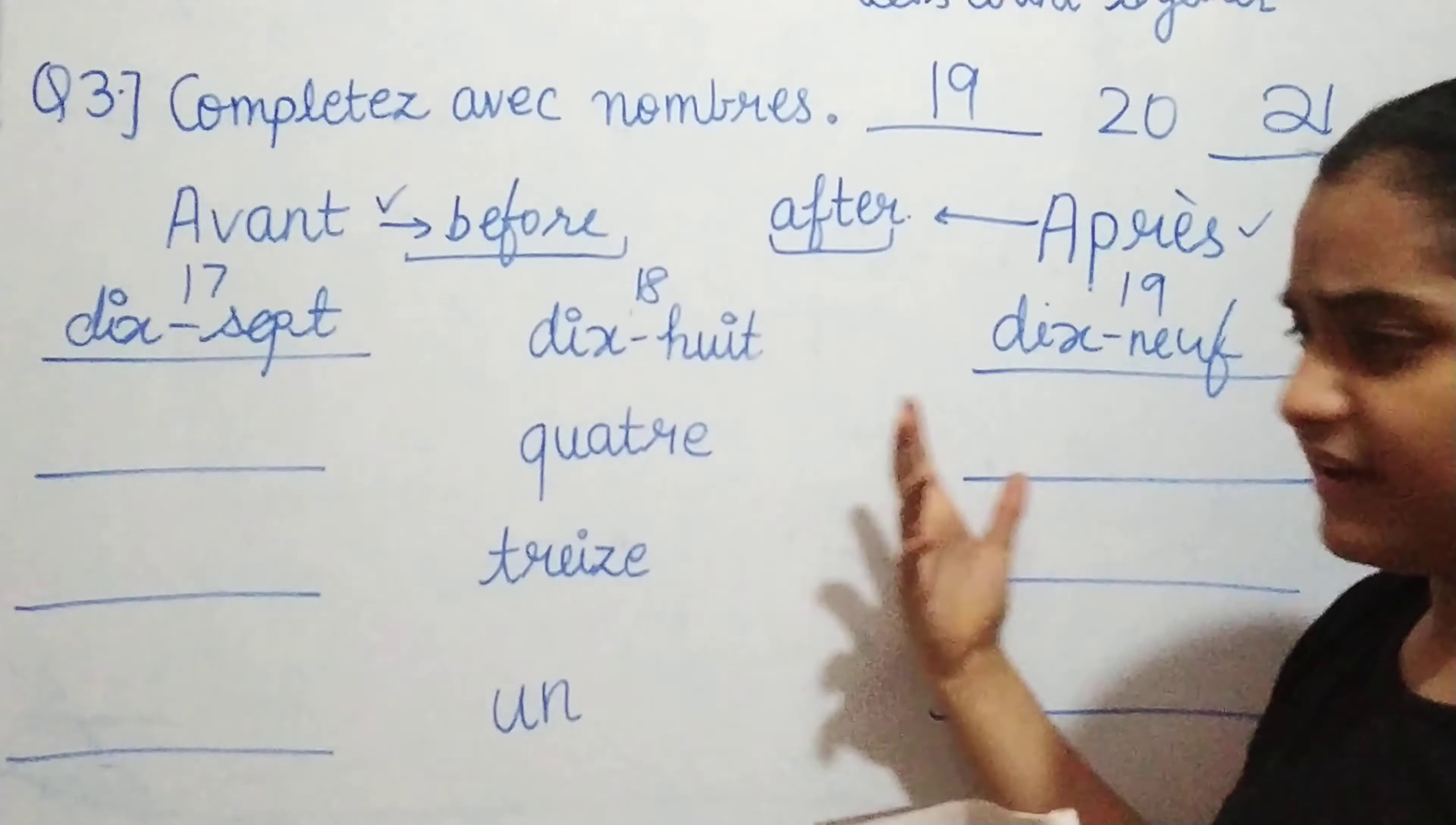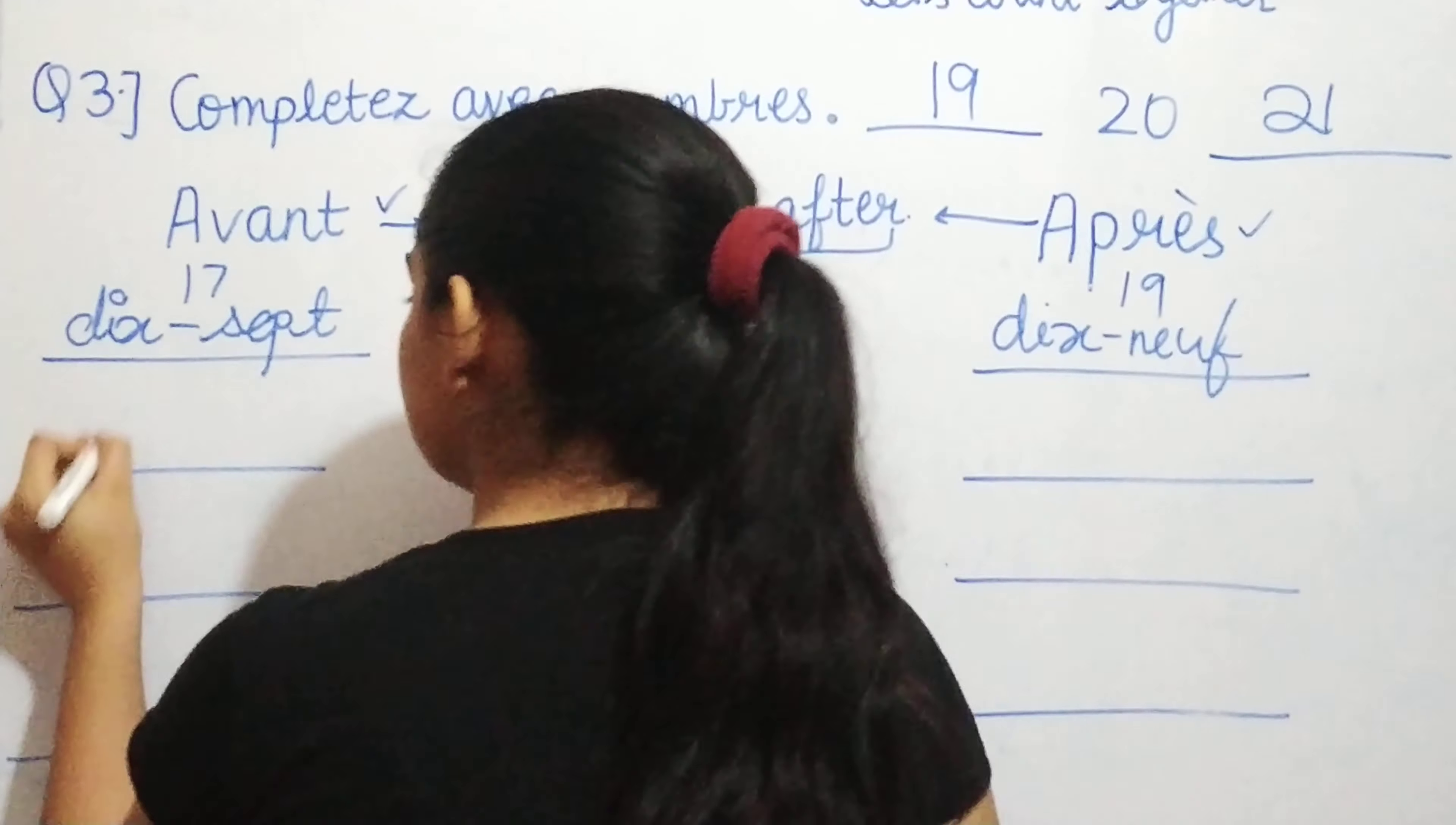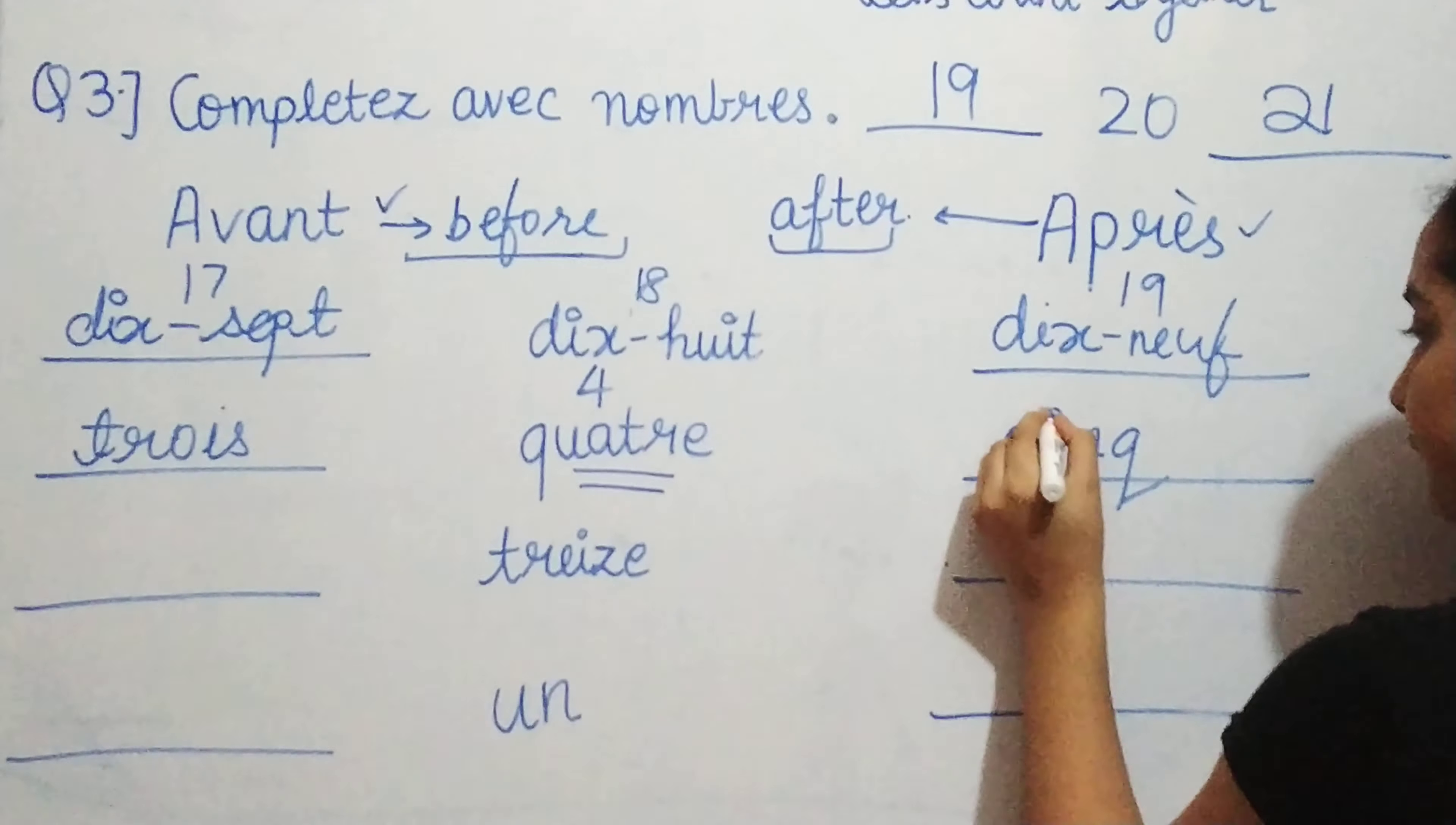Similarly, all will be like this. So now this is quatre. Quatre is what? Four. Once you know the counting, this should be easy for you. Quatre is four. What comes before four? Three. So we'll write trois. And what comes after four? Five. So we'll write cinq. This is trois, quatre, cinq. This is easy.